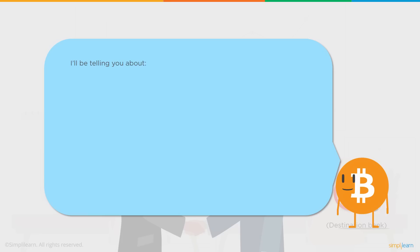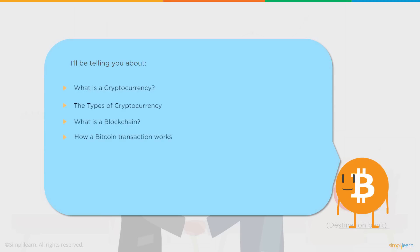I'm going to tell you about what is a cryptocurrency, what are the different types of cryptocurrencies in the market, what is a blockchain, how a Bitcoin transaction works, the features of a blockchain, and we will talk about the Walmart problem.